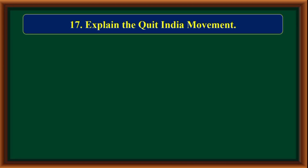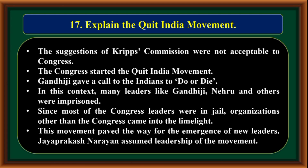Explain the Quit India Movement. The suggestions of the Cripps Commission were not acceptable to the Congress. The Congress started the Quit India Movement. Gandhiji gave a call to Indians to 'do or die.' Many leaders like Gandhiji, Nehru, and others were imprisoned. Since most of the Congress leaders were in jail, organizations other than the Congress came into the limelight. The movement paved the way for the emergence of new leaders. Jay Prakash Narayan assumed leadership of the movement.